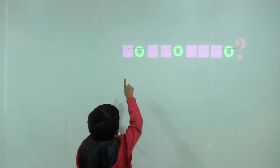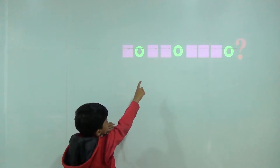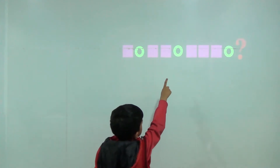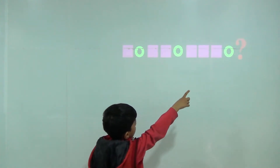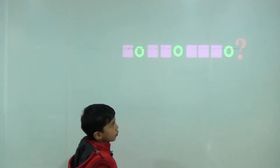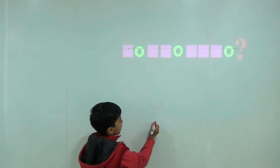One square, one circle. Two squares, one circle. Three squares, one circle. So now four squares.